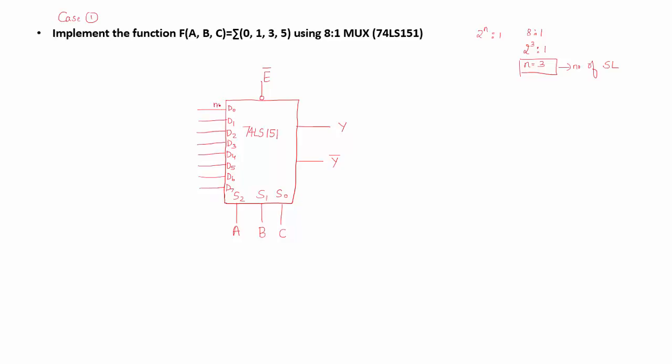That is D0 will represent M0, D1 will represent M1, D2 will represent M2, D3 will represent M3, D4 will represent M4, D5 will represent M5, D6 will represent M6, and D7 will represent M7.